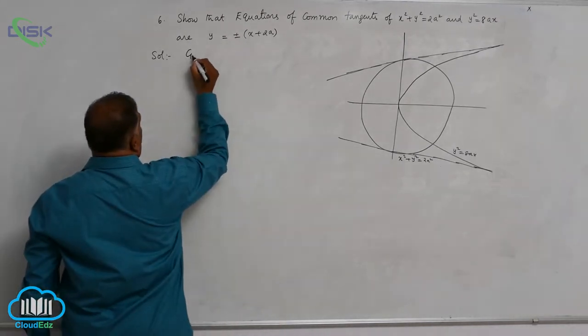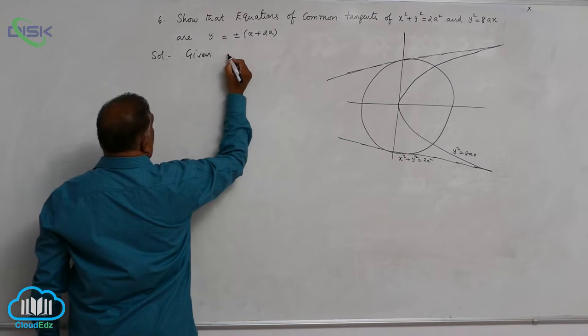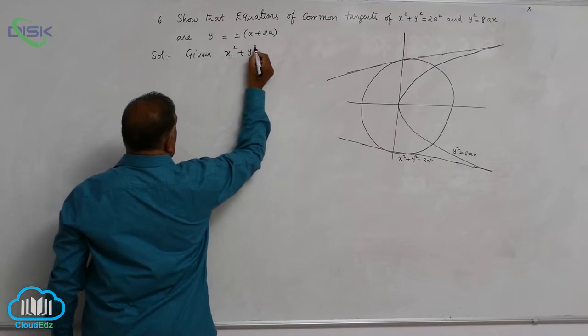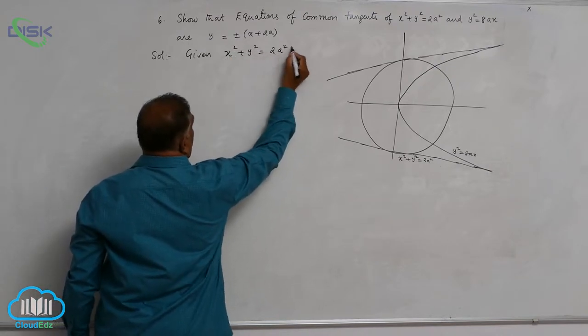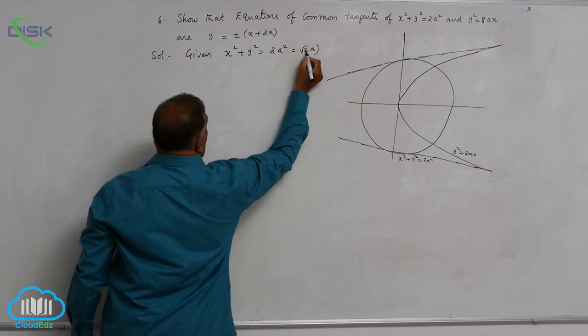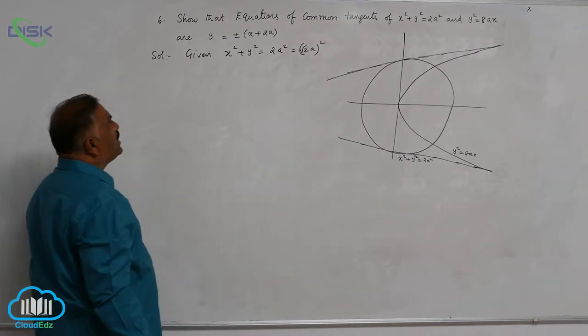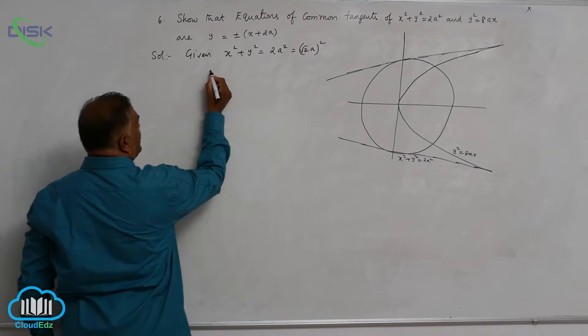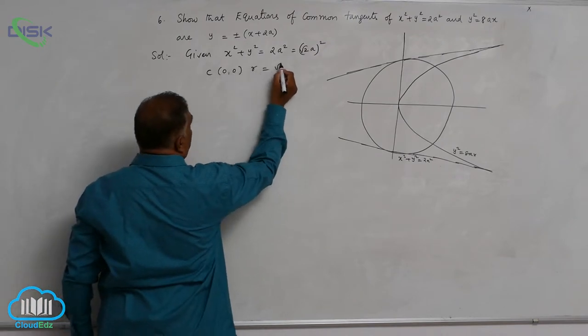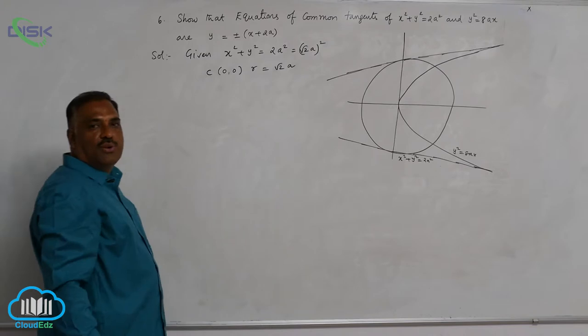Given circle equation is x square plus y square equal to 2a square can be written as root 2a whole square. Now we know that its center is 0, 0 and radius is equal to root 2 times a units.